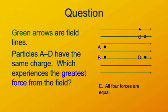This is a uniform field. What that means is everywhere the field is in the same direction and the same strength. We know that because all the field lines are parallel — pointing in the same direction. And the magnitude is not changing because the strength of the field is given by the distance between the field lines, and here that distance is the same everywhere.